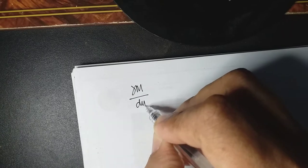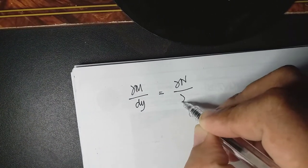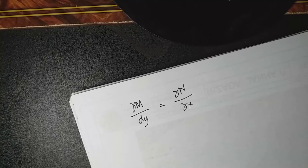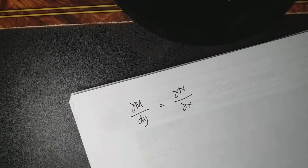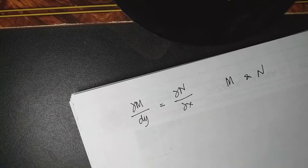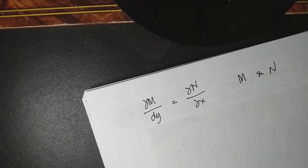Let us have Chapter 4 of Differential Equations: Exact Differential Equations. In order for the equation to be exact, this condition must be satisfied: the derivative of M in terms of Y must be equal to the derivative of N in terms of X. In Exact Differential Equations, it is crucial to determine the value of M and N, then differentiate M in terms of Y holding X constant, and differentiate N in terms of X holding Y constant.